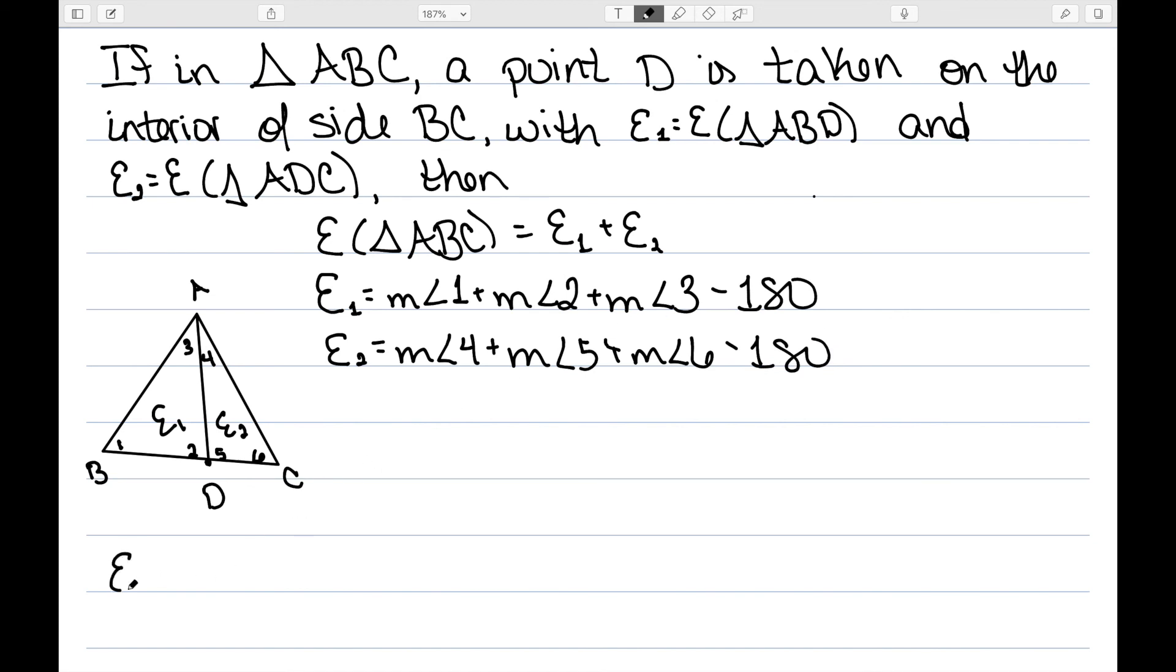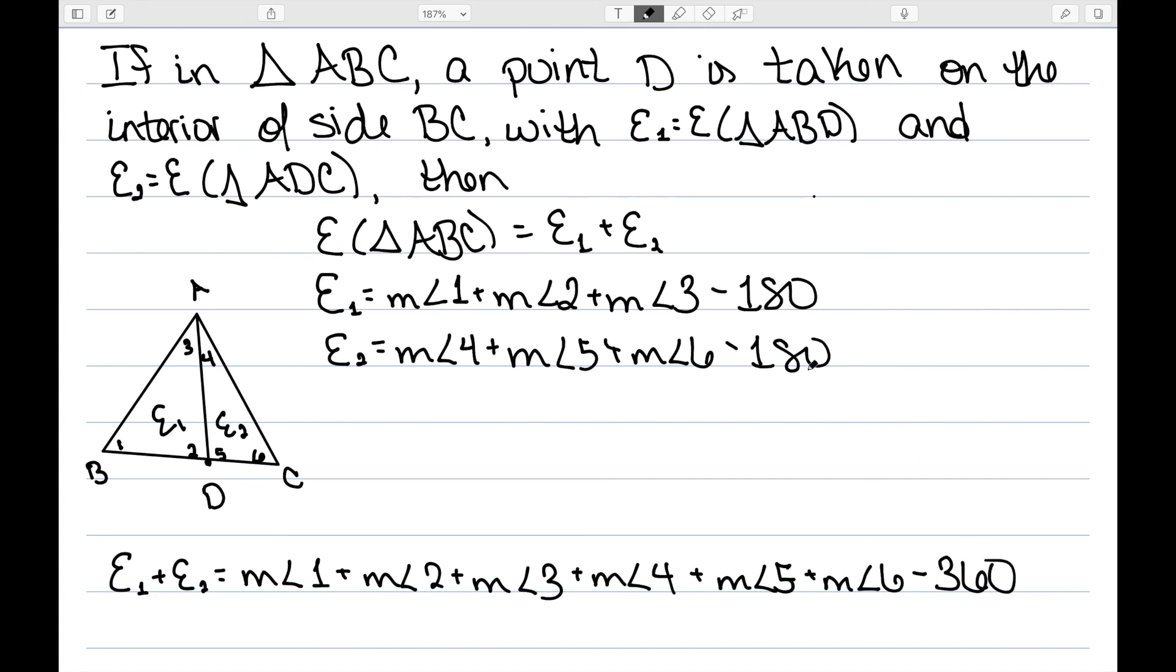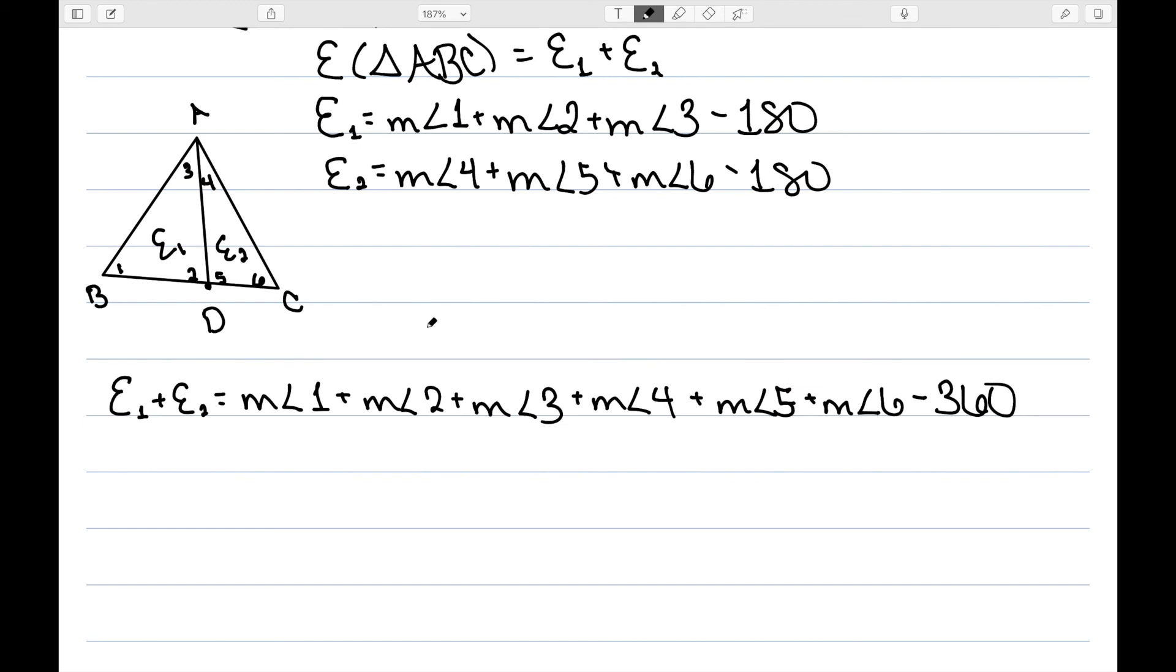So if I try to add these, I'm going to do this at the bottom so I have space. This would be the measure of angle 1 plus the measure of angle 2 plus the measure of angle 3 plus angle 4 plus angle 5 plus angle 6. And then minus 360 since I have 2 minus 180s. If we scroll down just a little bit. Angle 1 is the measure of angle B. Angle 3 plus angle 4 is the measure of angle A. Angle 6 is the measure of angle C.